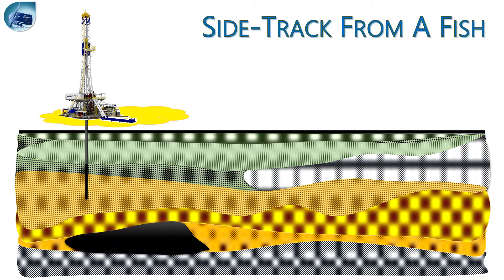Side track from a fish. When tools are lost in hole due to any specific reasons such as twist-offs, drilling can be resumed through deviating from the original wellbore. Side tracks can help in restoring the well and get away from the fish and its magnetic interference effects.